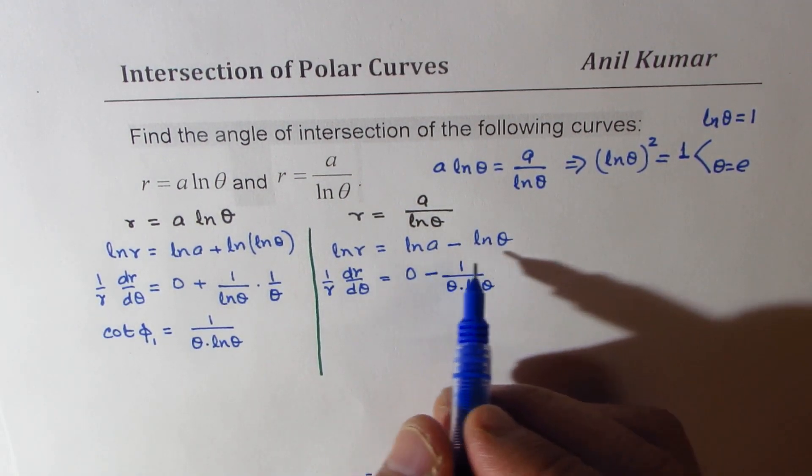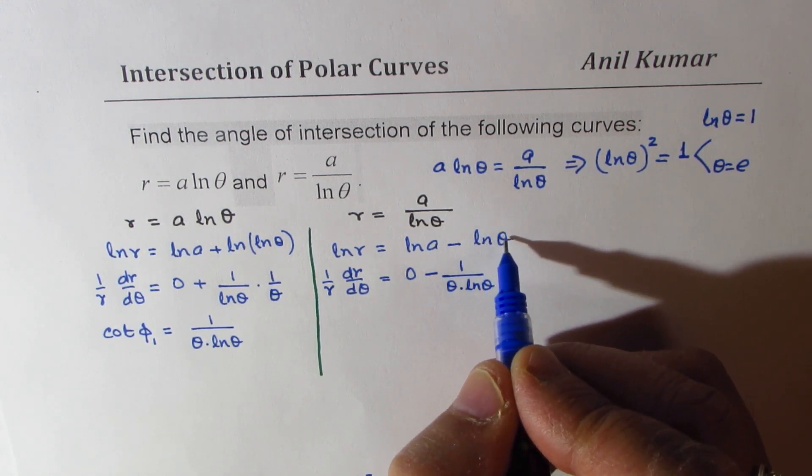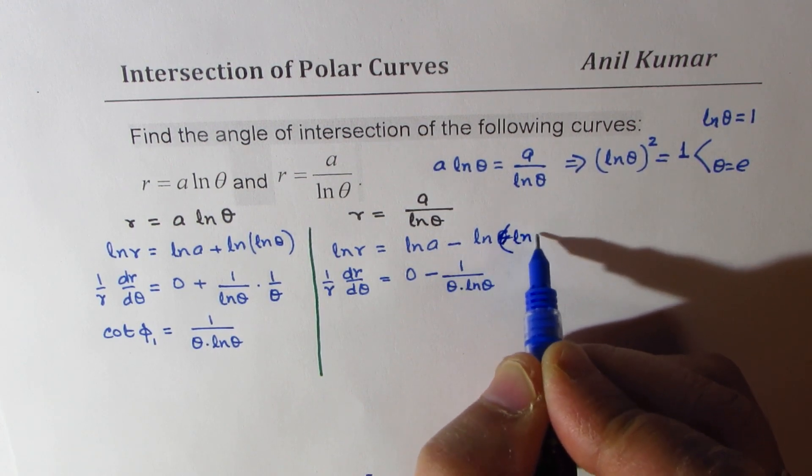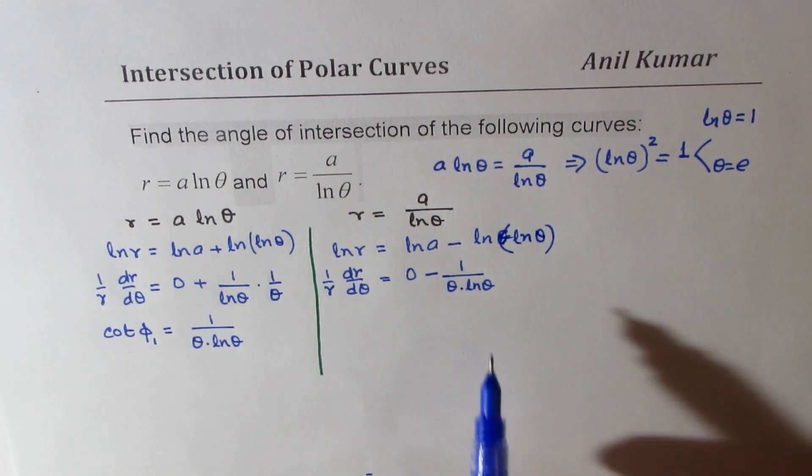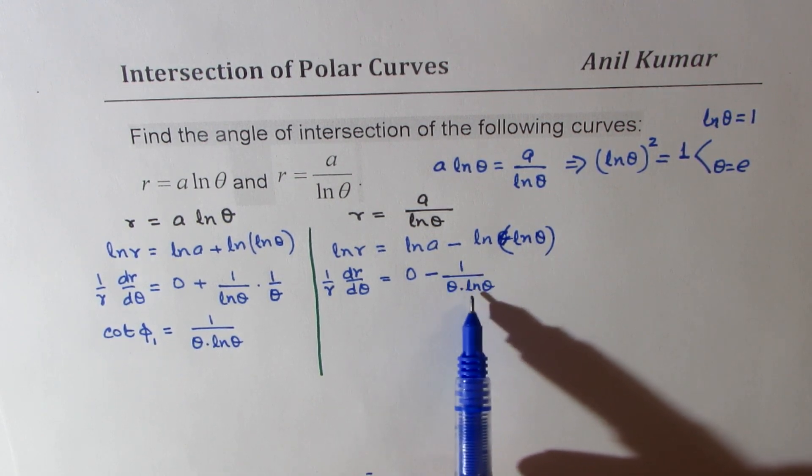So I didn't write ln just a minute, ln of ln theta. So differentiating this gives us 1 over theta times ln theta.